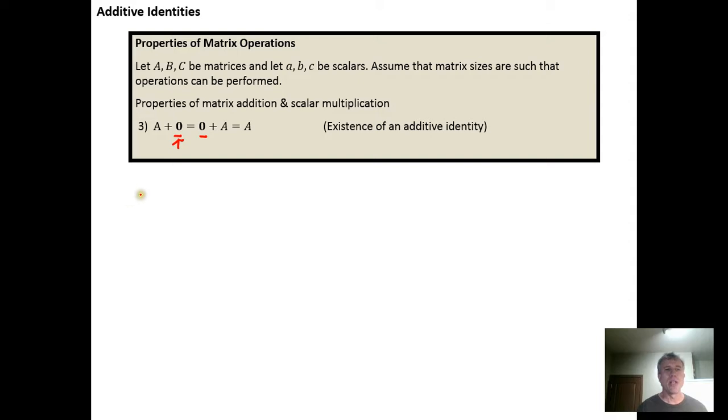For example, if we were working with 2×2 matrices, we have a matrix with elements A, B, C, D.